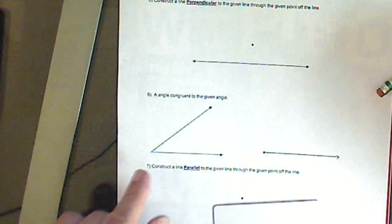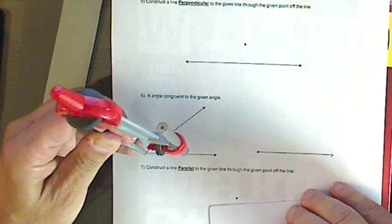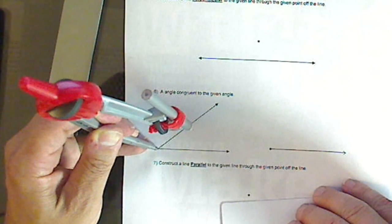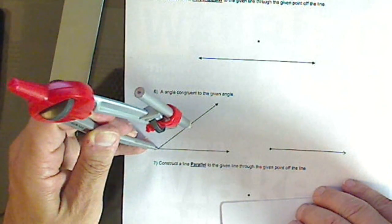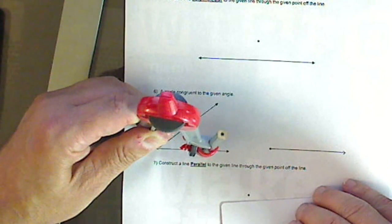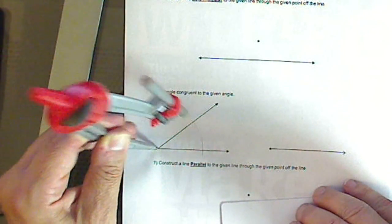Now, we want to copy the same amount of inclination. So what I do is I put this on the point, and yes, this is how we start angle bisectors, but be careful, that's not what you're doing. Don't let your mind drift. And we draw an arc.